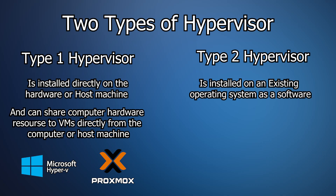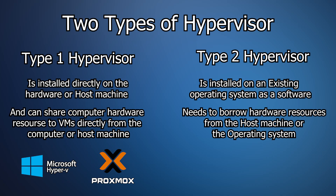A type 2 hypervisor has to borrow resources from the operating system. There are a number of type 2 hypervisor examples, but for this tutorial, I'm going to mention only one that I will be using as a type 2 hypervisor, which is VirtualBox.